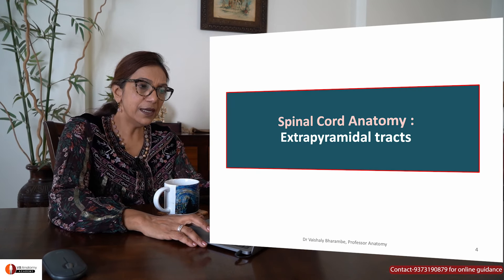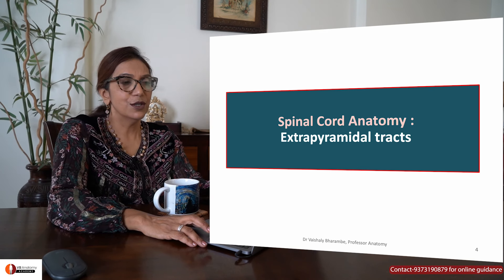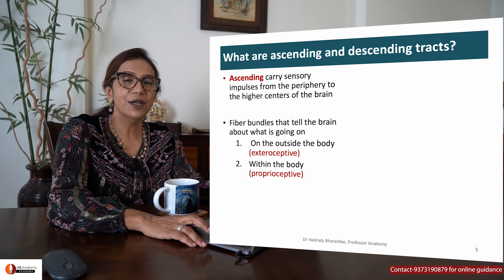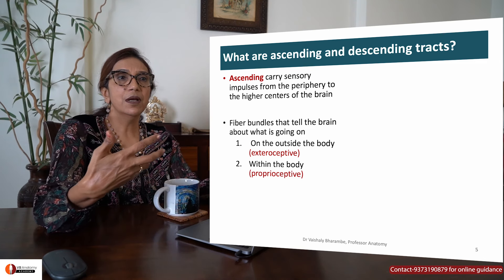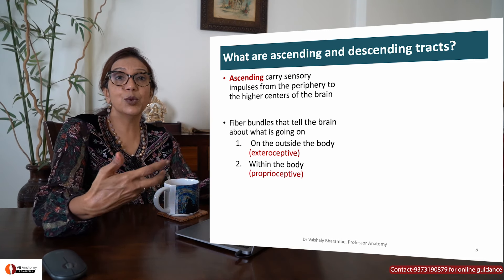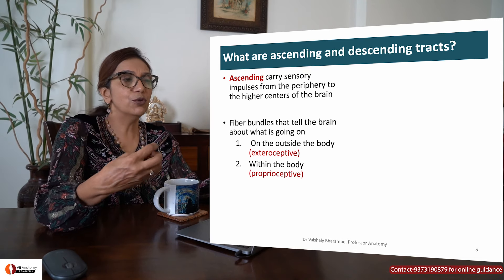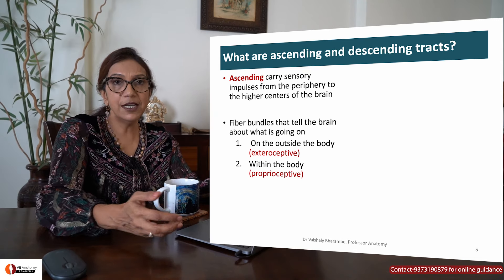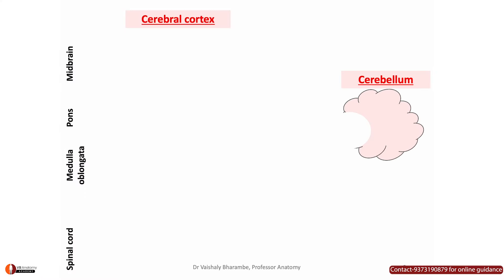Let's begin: spinal cord anatomy, extrapyramidal tracts. Just to bring you into the lecture — you're all aware that our body generates some sensory stimuli. These sensations are carried up to the brain through tracts called ascending tracts. Take a look — this is your spinal cord, the brain stem, cerebral cortex, and cerebellum.